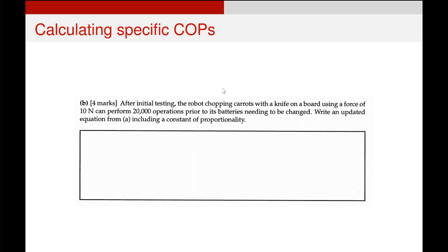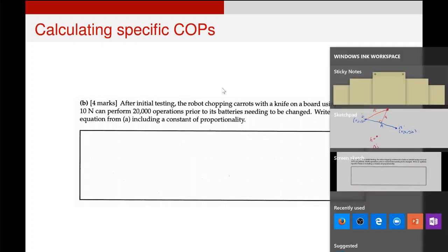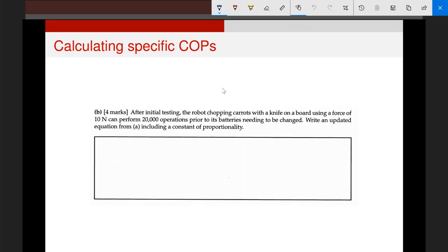After initial testing, so the testing has now been done, we know a few other bits and pieces that can help us with this. After initial testing, the robot chopping carrots with a knife on a board using a force of 10 newtons can perform 20,000 operations prior to its batteries needing to be changed. Write an updated equation including a constant of proportionality.